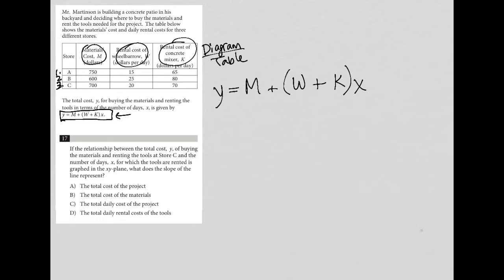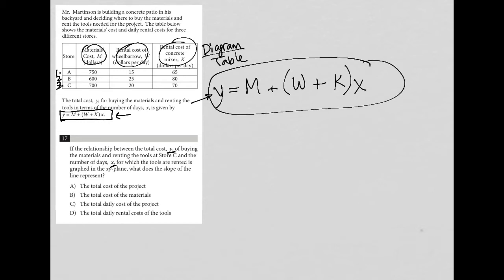So if we were to graph this relationship between total cost Y and X, we already have that relationship — it's given to us. Anytime a question talks about an XY plane, graphing, slope, and a line, I'm going to think about this through a Y equals MX plus B format.